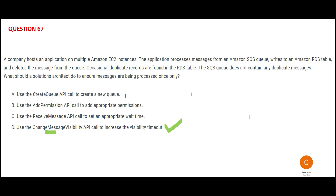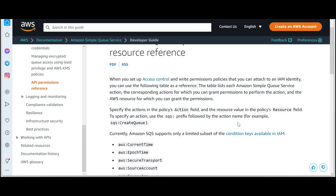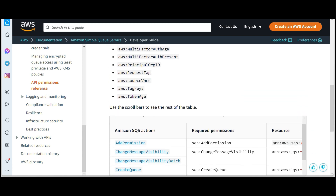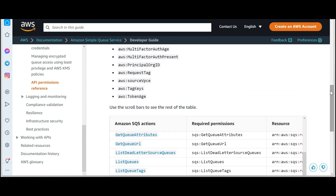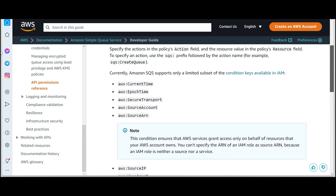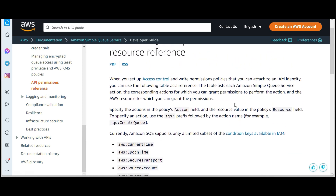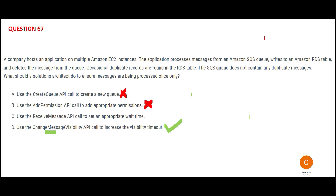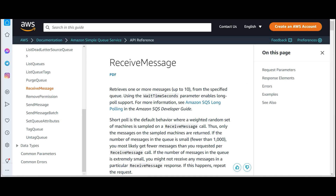Option B says that you add permissions — this is not a permission issue. Because of a permission issue you will not get a duplicate problem; you will get some sort of error saying you are not able to read, and so on. But you will never get a problem with duplicate data. So option B is wrong.